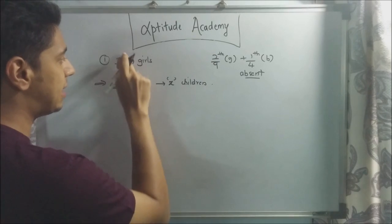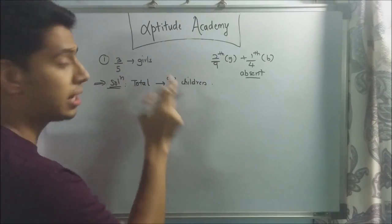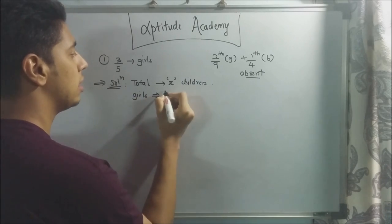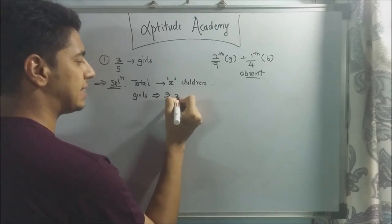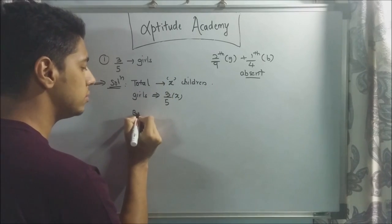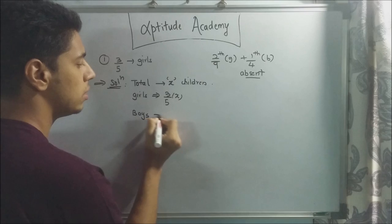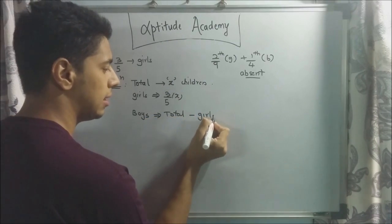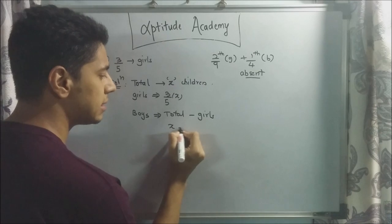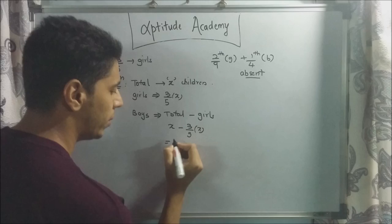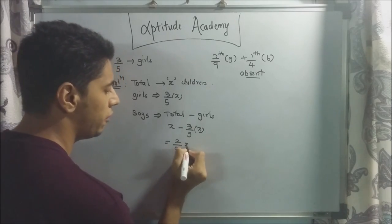They have told us that 3/5 of the total children are girls. So the girls will be 3/5 of x. 3/5 of the class is girls. Now, boys will be equal to total minus girls. Total is x. x minus 3/5 of x. I am just doing it fast, it becomes 2/5 of x. Boys are 2/5 x.